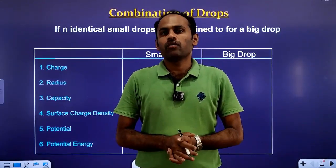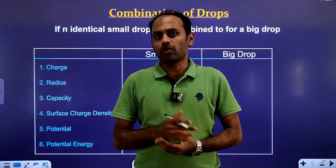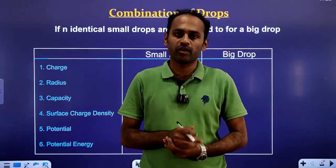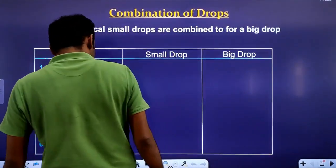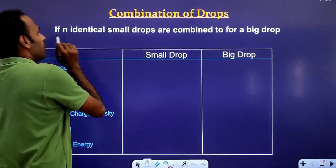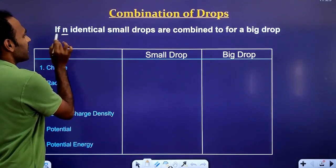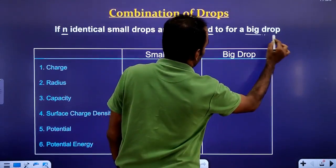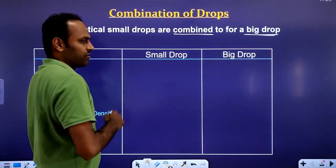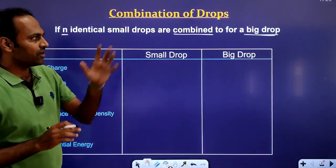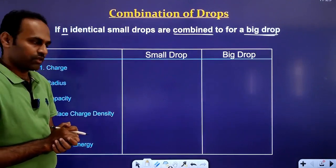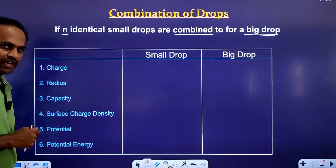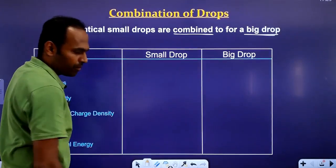Hello students. In this video, we learn about combination of small drops as well as motion of a charged particle in electric field in terms of potential. So let us begin. The case is: there are n identical small drops, and we are combining those n identical small drops to form a big drop. So what happens to the charge, radius, capacity, surface charge density, potential, and potential energy when those small drops are combined to form a big drop — that we are going to see.